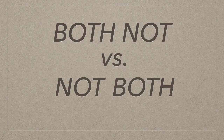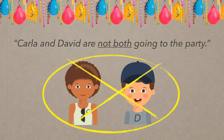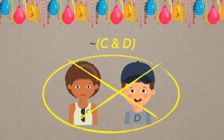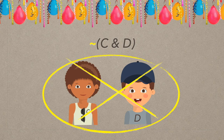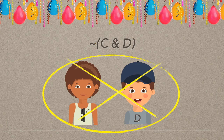But notice, both not is very different from not both. Consider: Carla and David are not both going to the party. It's not clear whether Carla is going, and we're not sure whether David is going. But one thing is certain — both of them together is something you will not see at the party, because they're not both going. In symbolic logic, you place both C and D in parentheses, and the tilde outside negates whatever is in the parentheses. Since it says both inside, the tilde makes it not both. So this is the correct translation for Carla and David are not both going to the party.